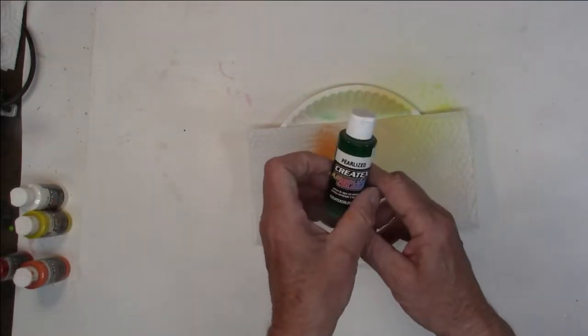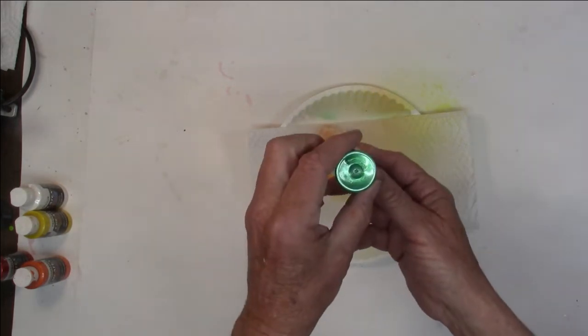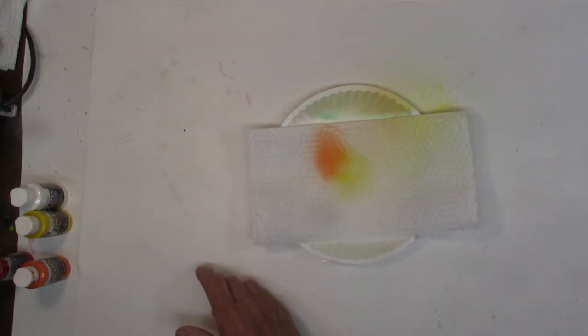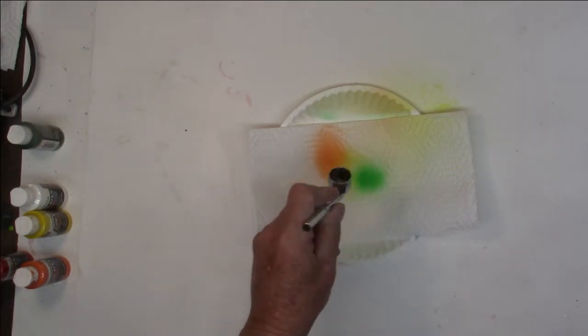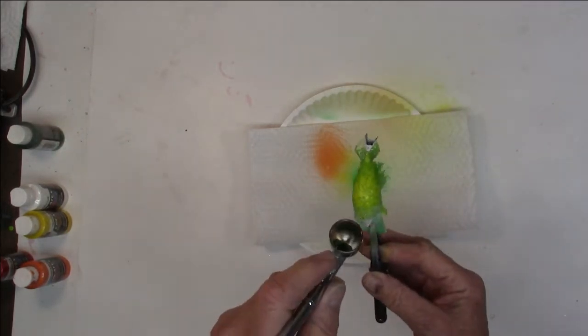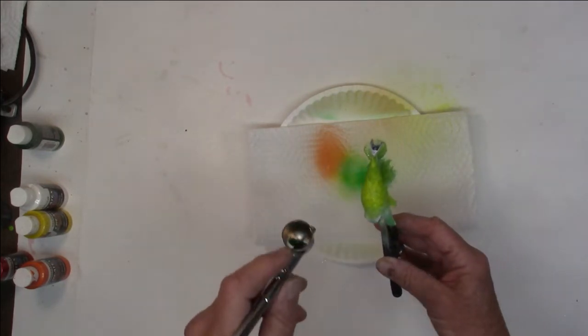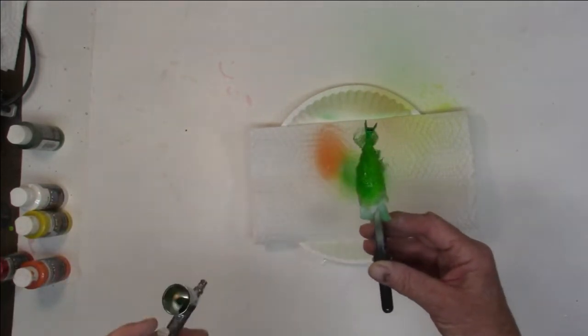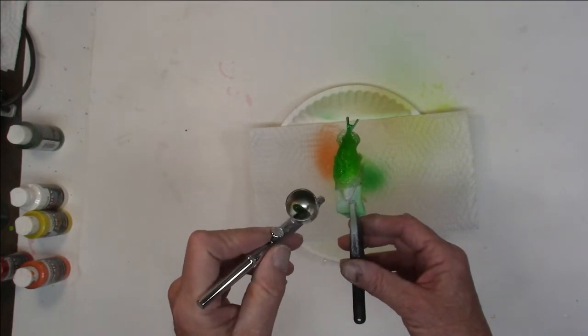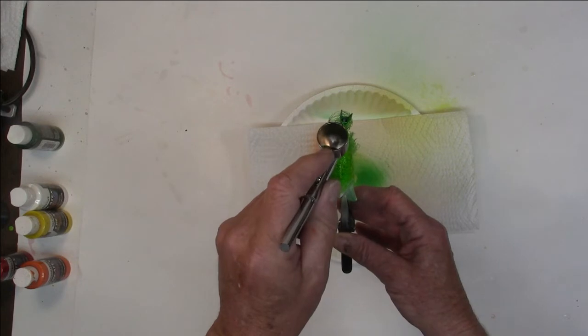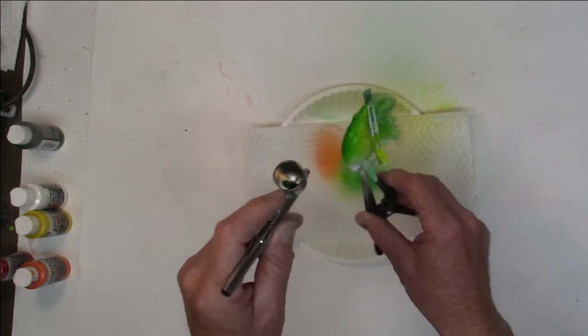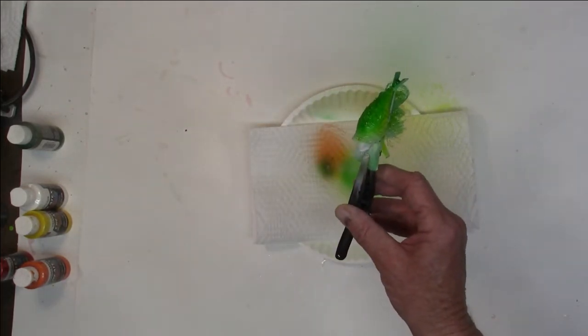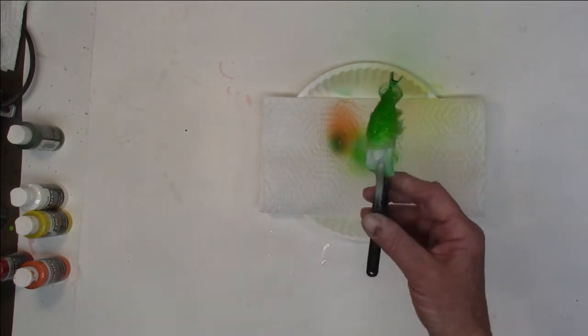All right, so we got that. Next we're going to step up with Createx pearlized pearl green—it's kind of a dark green color. Get a few drops in here, there we go. We're going to go right down the back again. We're not going to mess with the head yet. When I don't want to mess around with the head, instead of starting at the front and going back, a lot of times I start my paint at the back and work to the front. All right, that's all we're gonna do for that.